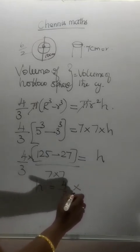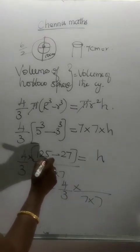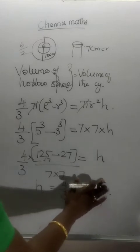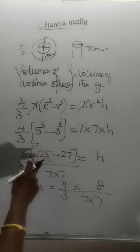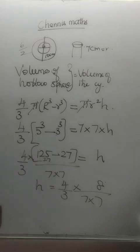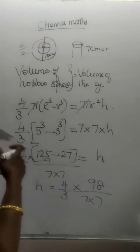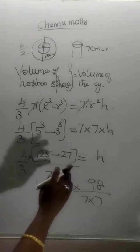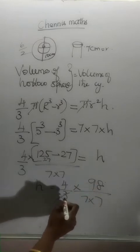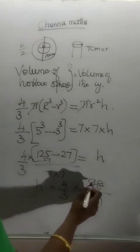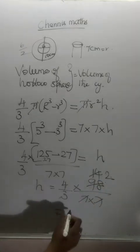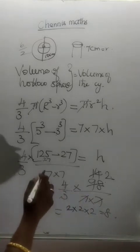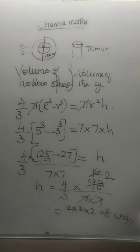H is equal to 4 by 3 into (125 minus 27) divided by 7 into 7. That is 4 by 3 into 98, divided by 49. Cancelling 7 with 49 gives 7; cancelling further gives 4 into 2, equal to 8. The height of the cylinder is 8 centimeters.